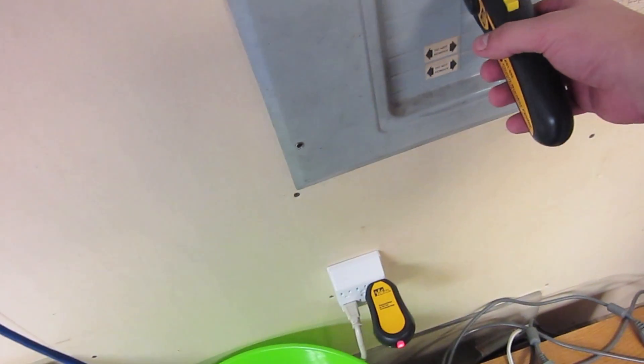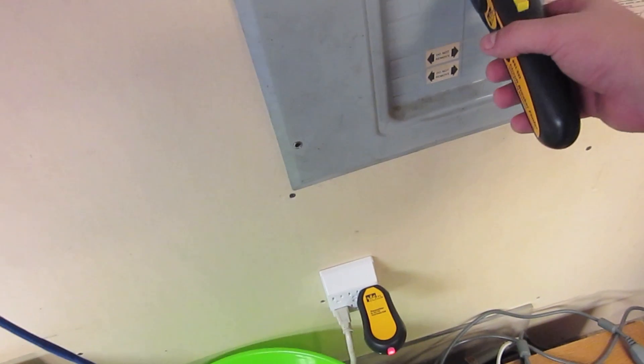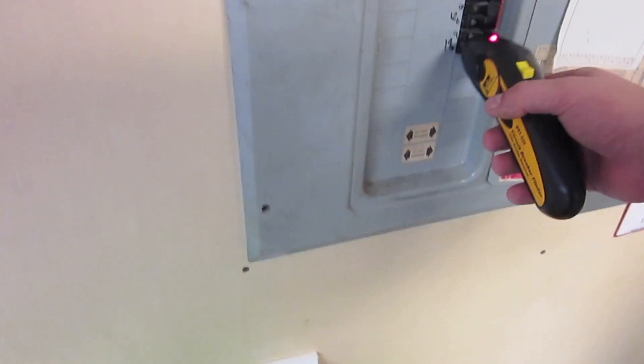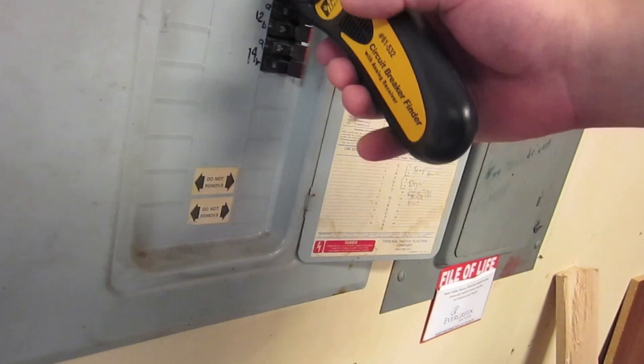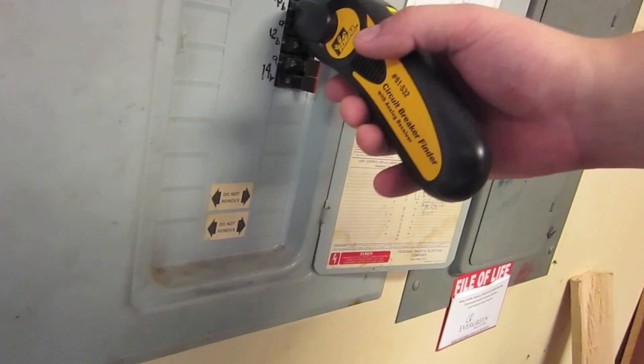Then you just run it up and down your breaker panel until you get only one breaker that shines. Now if you look at the side, you can kind of figure out which one it is.